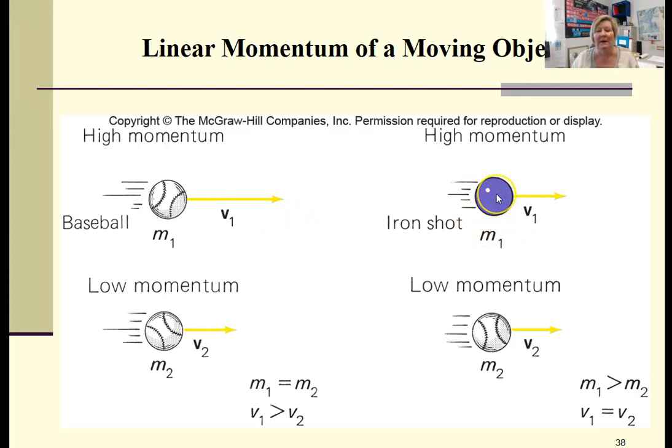If you look at an iron shot which is much more massive than a baseball and hold the velocities constant, then the one with the greater mass, which is the iron shot, will have the higher momentum. So just looking at the direct proportional relationships between mass and velocity and momentum.